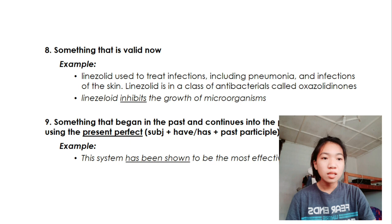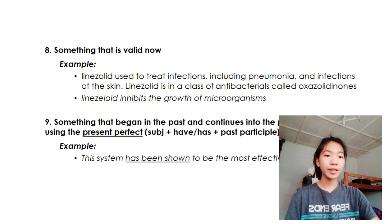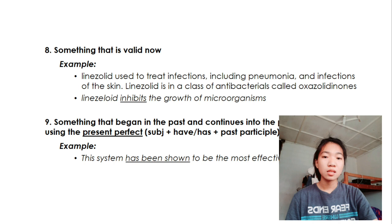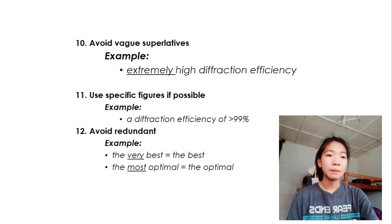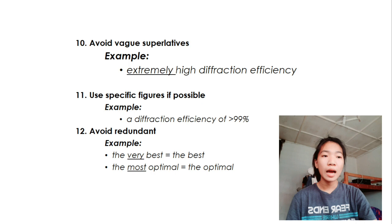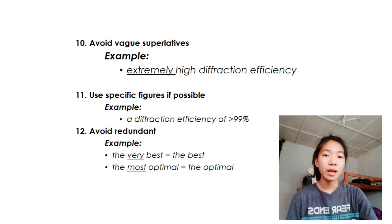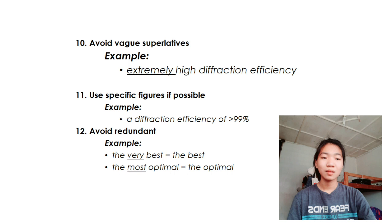For number nine, something that began in the past and continues into the present is expressed using the present perfect tense. Present perfect participle. It is the subject plus have or has plus past participle. For instance, the system has been shown to the most effective. For number ten, avoid bugs of superlatives, such as extremely high diffraction efficiency. Number eleven, use specific figures if possible. A diffraction efficiency of less than 99%. Twelve, avoid redundant. Example, the very best, you can say it the best, or the most optimal, or we can say it the optimal.